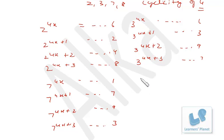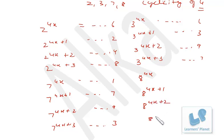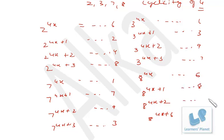And for 8: 8 raised to 4x ends in 6, 8 raised to 4x+1 ends in 8, 8 raised to 4x+2 ends in 4, and 8 raised to 4x+3 ends in 2. So this is very simple.